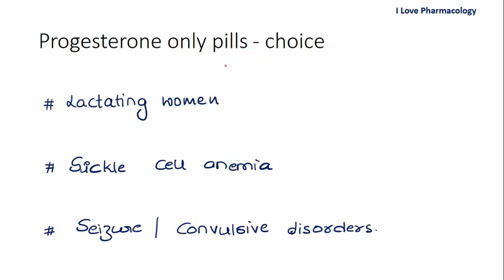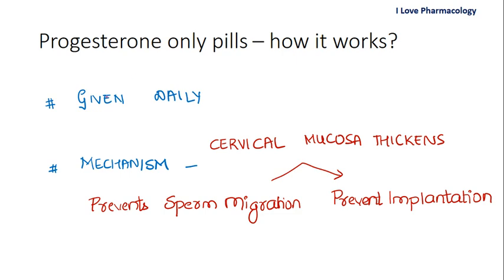Progestin-only pills are also the choice of contraceptive for lactating women, women with sickle cell anemia, and persons with seizure or convulsive disorders — because estrogen can precipitate epilepsy, only the progesterone component is used. The mechanism is that low-dose progesterone is given daily, thickening the cervical mucosa and thereby preventing sperm migration as well as the implantation process.